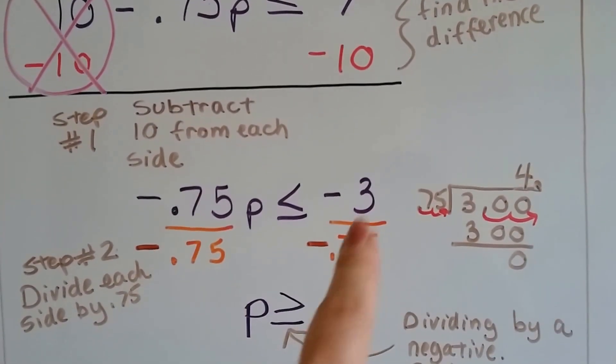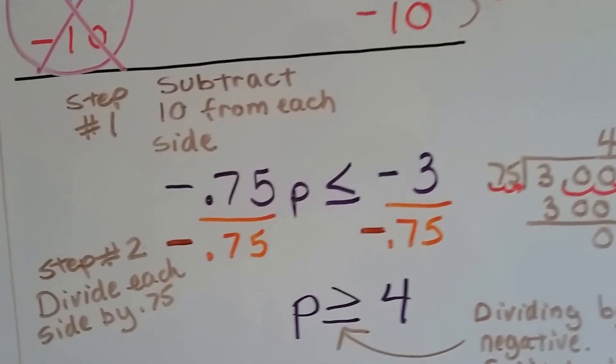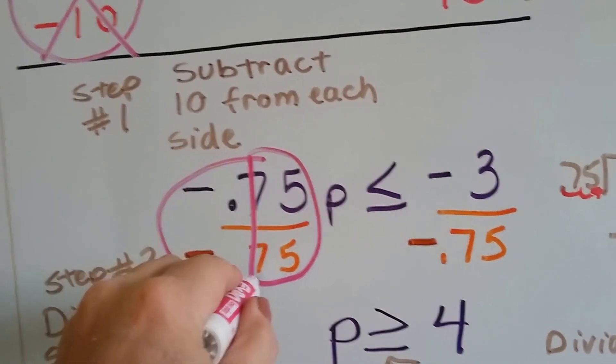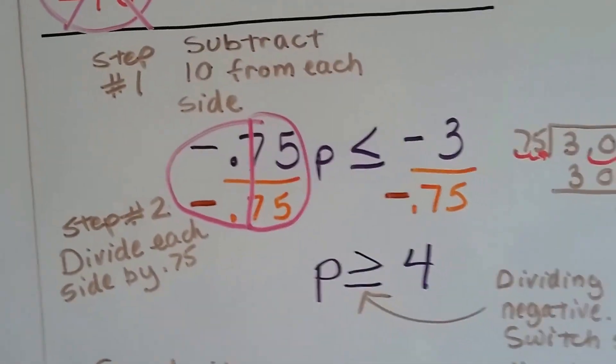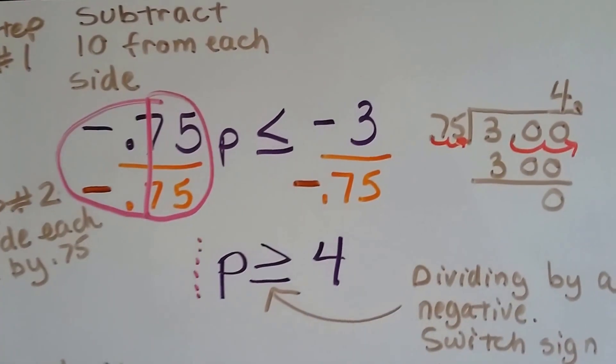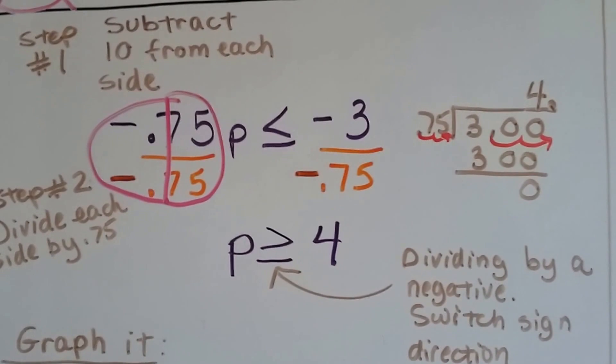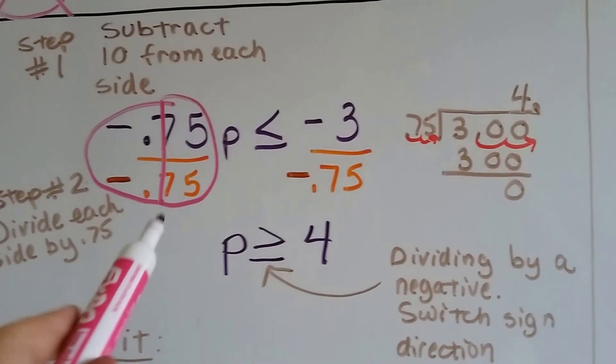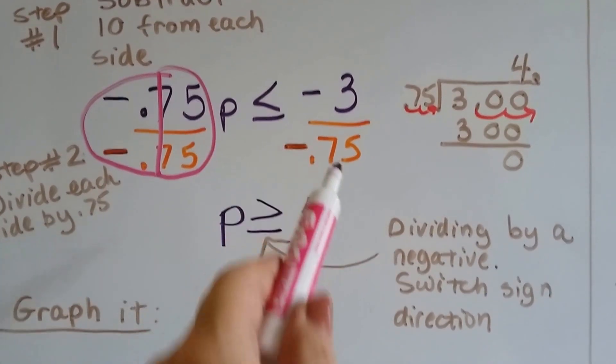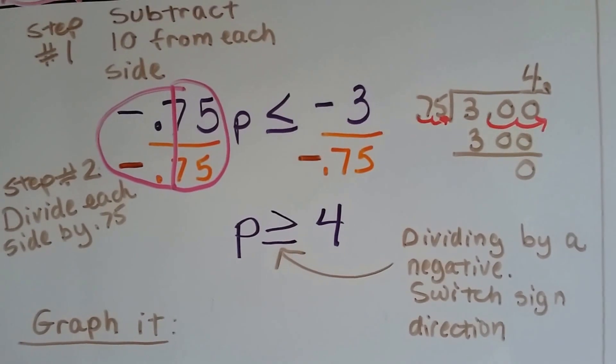So we divide both sides by the negative 0.75 to isolate this p by itself. This creates our friend, the invisible 1, and he's actually sitting here. We just don't see them, right? And we don't write them because we can see there's one p.